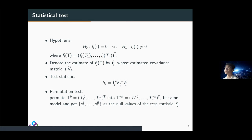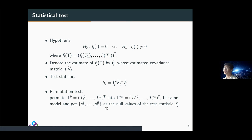Our hypothesis is simple: we want to test if the smooth function f_j is a constant zero for any t_i. We use a Wald-like test statistic, which can be treated as the square of f_j divided by the variance. We also perform the permutation test to generate test statistics based on the permutation procedure, which represents the null distribution of the test statistics.